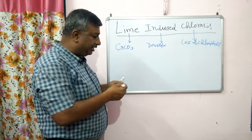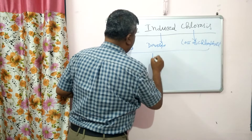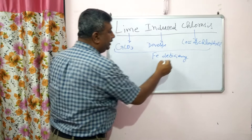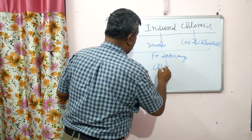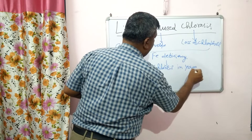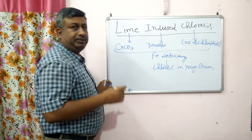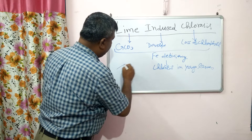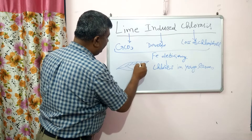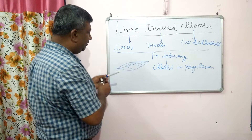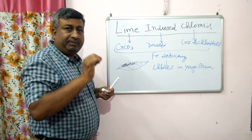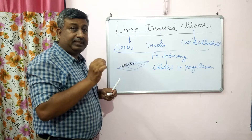So how does it induce iron deficiency? This is related with iron deficiency. In the case of iron deficiency, there is chlorosis — loss of chlorophyll — in young leaves. There is interveinal chlorosis, meaning the leaf shows chlorosis between the veins while the veins themselves remain green.